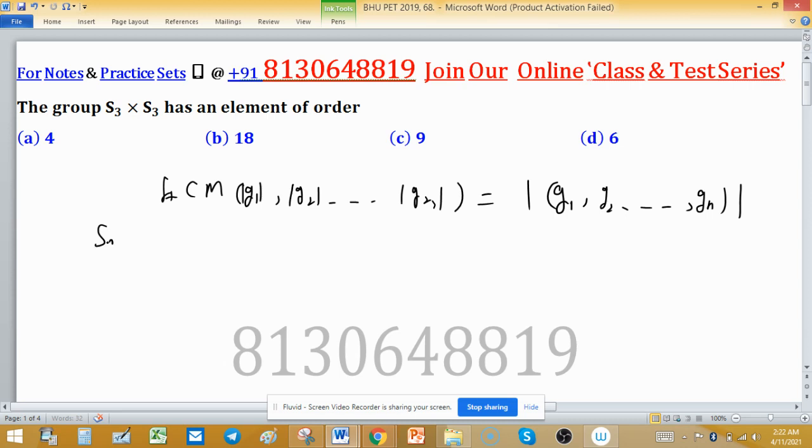We know that S₃ has elements of order 1, 2, 3. So S₃ cross S₃ will have element, suppose this is an element AB.